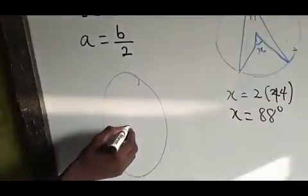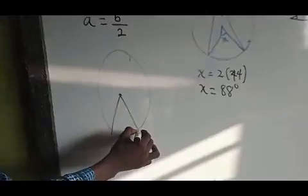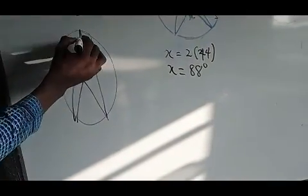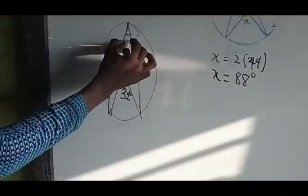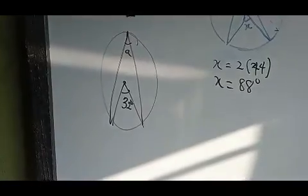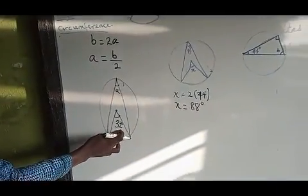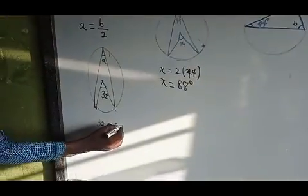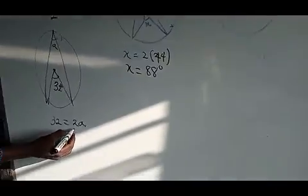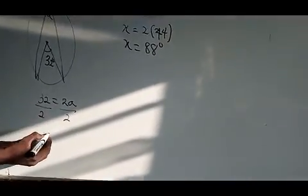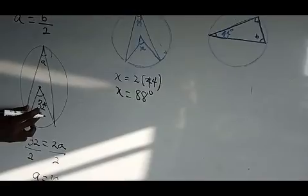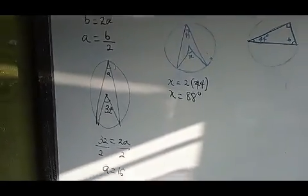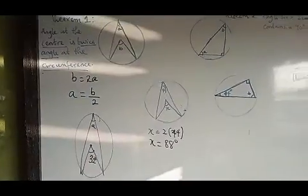Let's say I have another example with a circle. The angle at the center is 32 degrees, and I want to find E at the circumference. The angle at the center, 32, is twice the angle at the circumference, so 32 equals 2E. Dividing both sides by 2, E equals 16 degrees. So that is the first theorem.